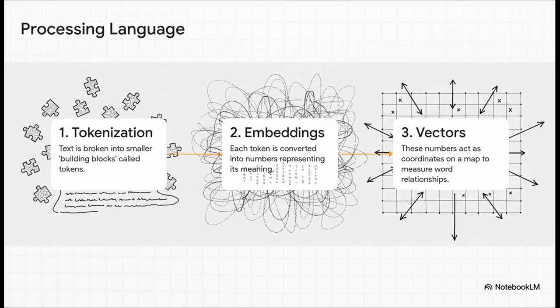First up, tokenization. The model takes a sentence and just shatters it into tiny pieces. Or tokens. Think of them like Lego bricks. Next, embeddings. Every single one of those little bricks gets turned into a long string of numbers. And finally, vectors.